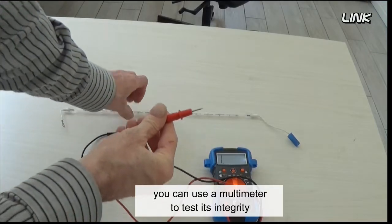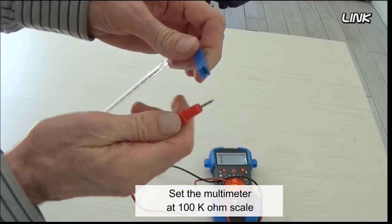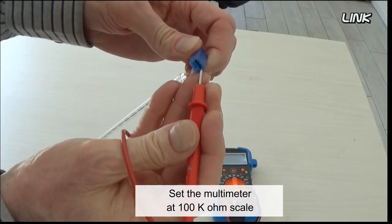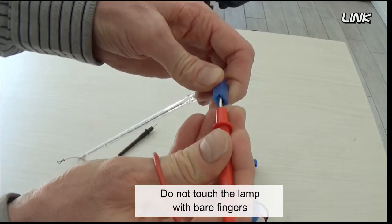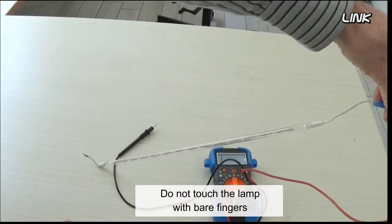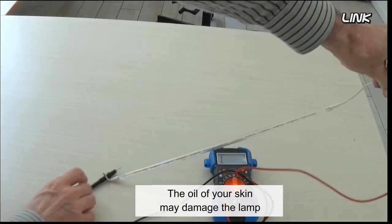Set the multimeter at the 100K ohm scale. Do not touch the lamp with bare fingers - the oil of your skin may damage the lamp.